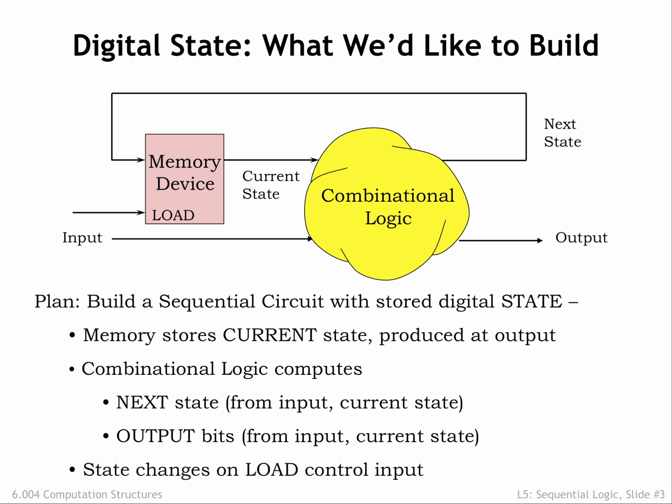The memory component has two inputs: a load control signal that indicates when to replace the current state with the next state, and a data input that specifies what the next state should be. Our plan is to periodically trigger the load control, which will produce a sequence of values for the current state. Each state in the sequence is determined from the previous state and the inputs at the time the load was triggered. Circuits that include both combinational logic and memory components are called sequential logic.